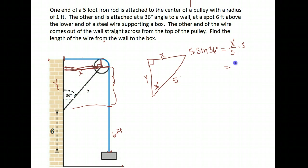I get x is 5 times sine 36 degrees. Make sure your calculator is in degree mode when you calculate this. 5 times the sine of 36 gives me that x is about 2.94. So this side of my triangle I created is 2.94 feet.